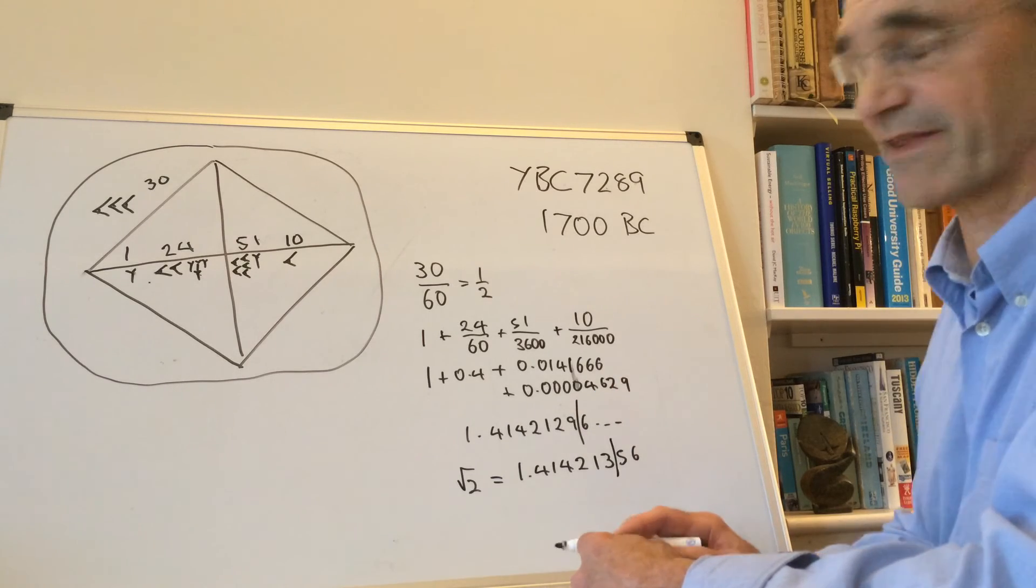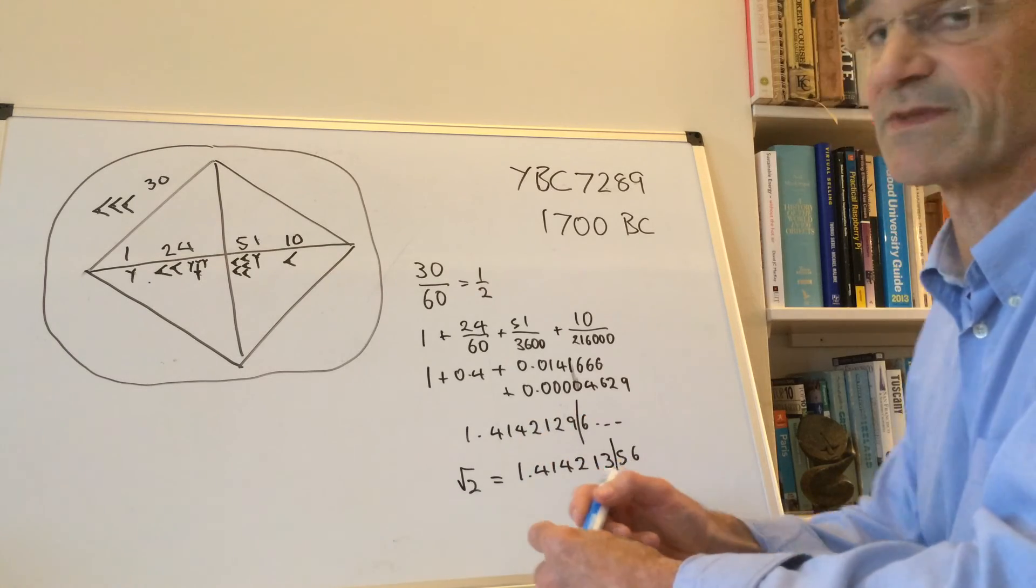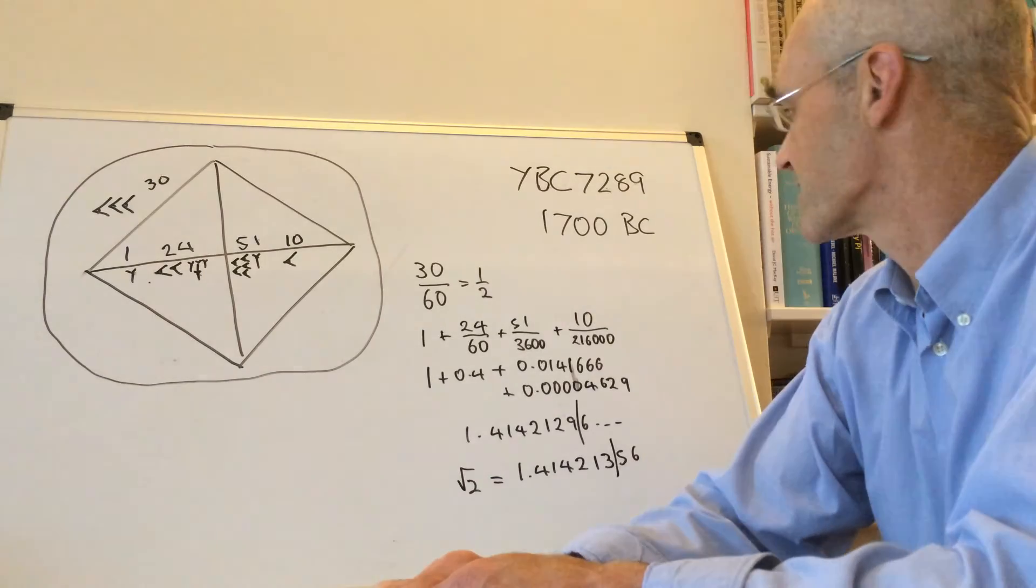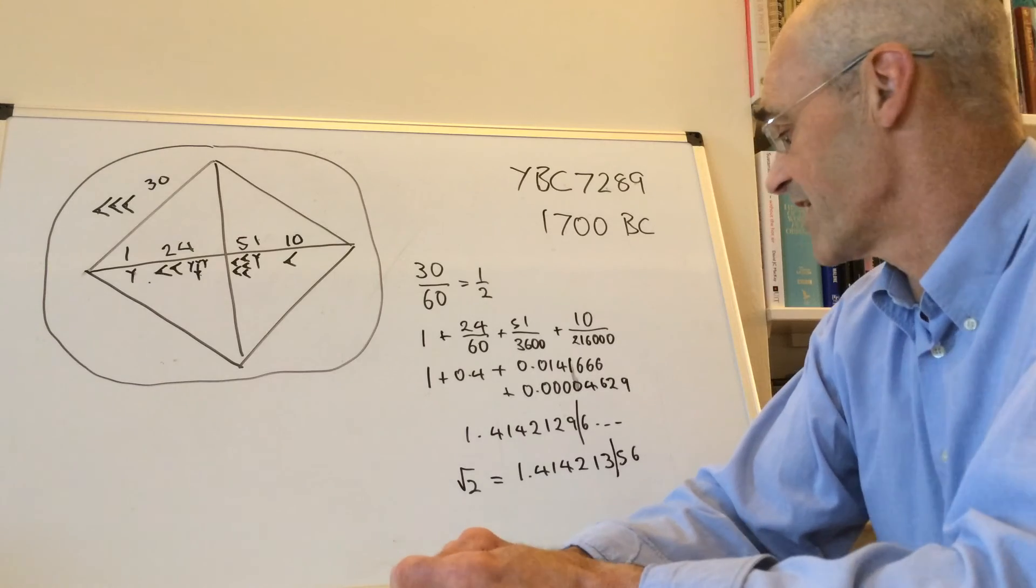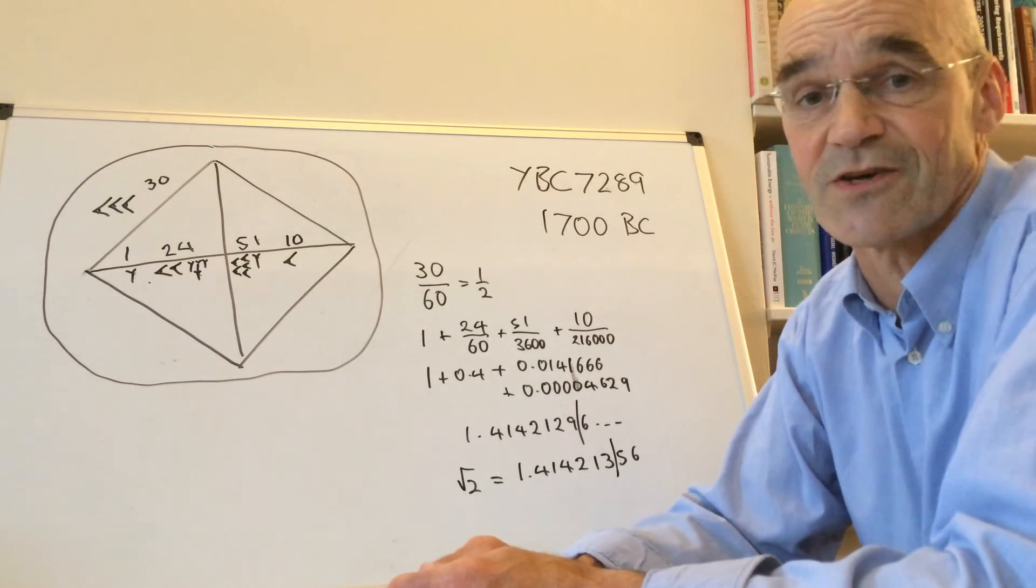I think that's pretty amazing—one, two, three, four, five, six, or seven decimal places of accuracy, and that was known to the Babylonians in 1700 BC. So the question is, how did they know the value to that degree of accuracy? They couldn't possibly have measured it using rope and bits of wood or anything like that.